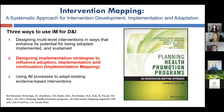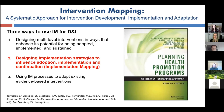There are three ways intervention mapping can help advance implementation science. First is designing multilevel interventions in ways that enhance their potential for being adopted, implemented, and sustained — what we call designing for dissemination. When developing an innovation, taking steps to ensure stakeholder and community engagement, careful planning, and articulating what you're doing and why makes it more likely to be adopted, implemented, and sustained. That's the traditional intervention mapping process.